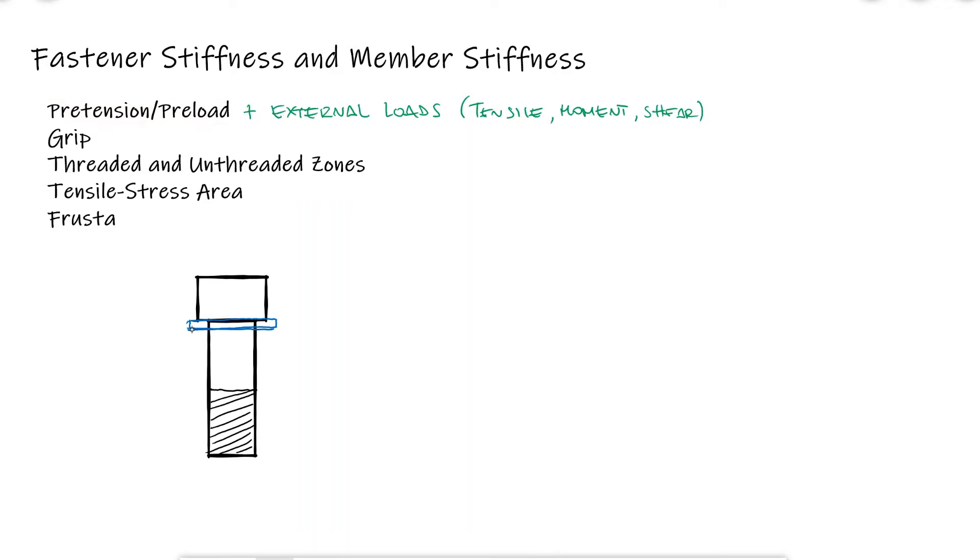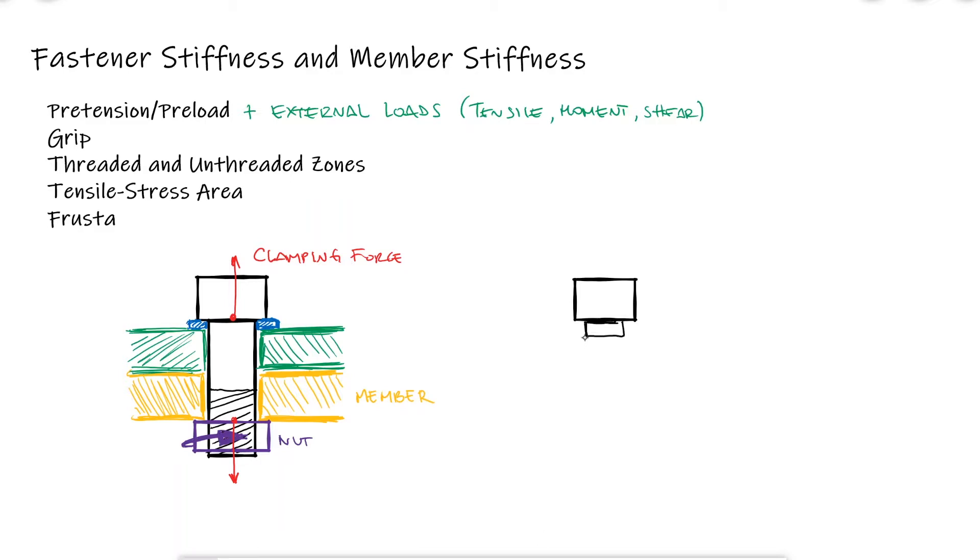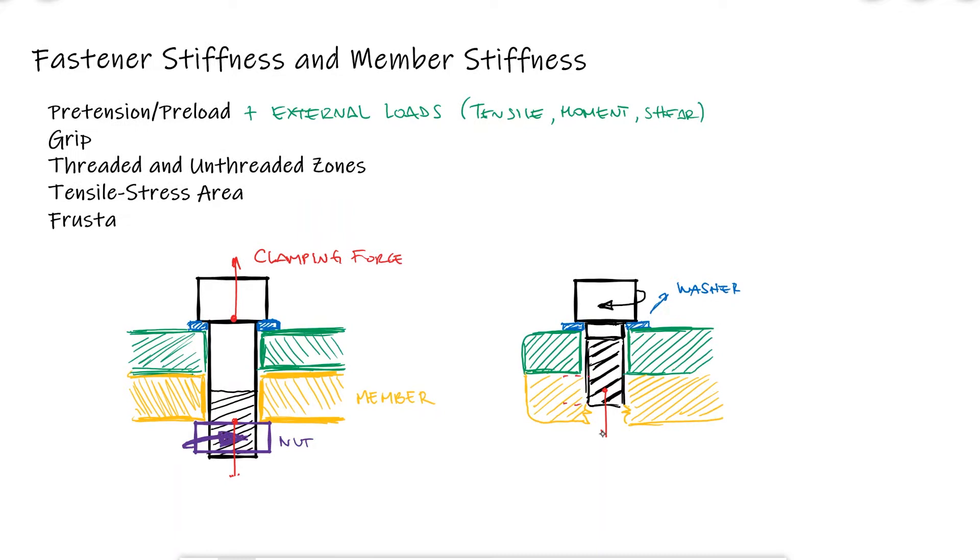As the nut is twisted after making initial contact with the member that is being clamped, the nut stretches the bolt, which produces a reaction force that we call the clamping force. In the case of screws, let's say a cap screw, as the screw is tightened, a section of its body will also be stretched, generating this clamping force.